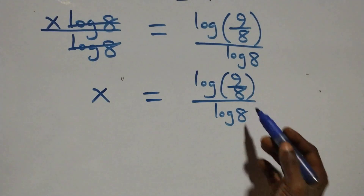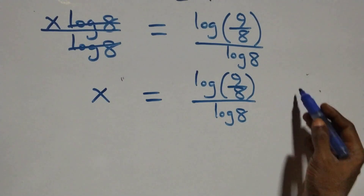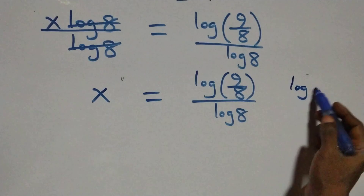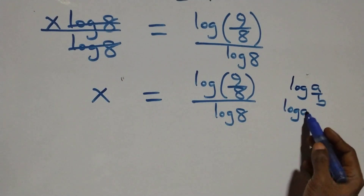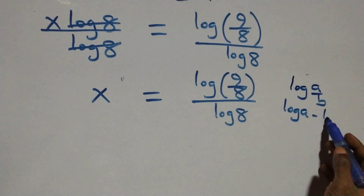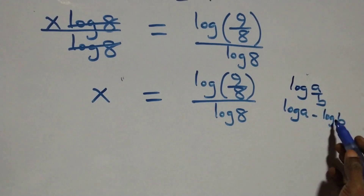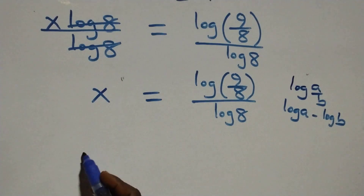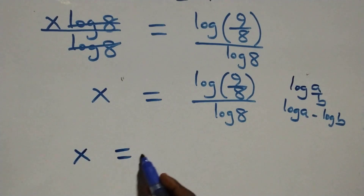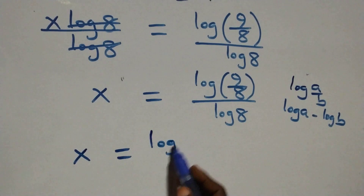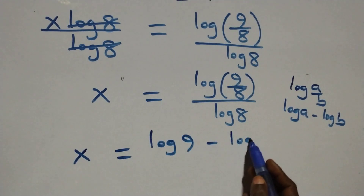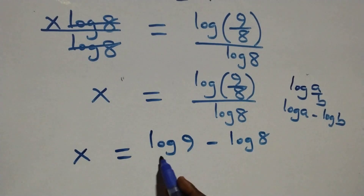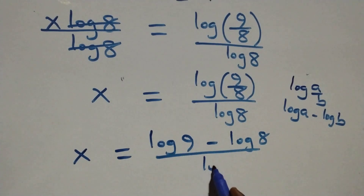Next step: this follows the law of logarithms. When we have log of a over b, this is the same thing as log a minus log b. So all we have becomes x equals log 9 minus log 8, all over log 8.